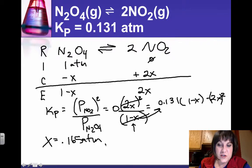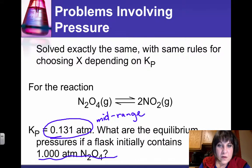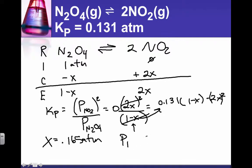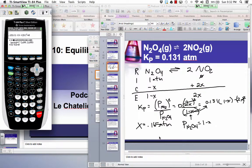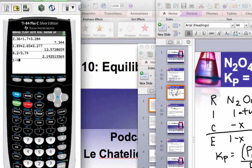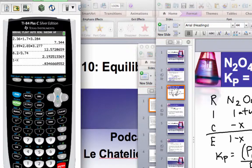Now let's answer the question, what are the equilibrium pressures in our flask? So at equilibrium, we will have, for N2O4, 1 minus x. So let's get the calculator back. And we just quit out of here, and do 1 minus x, 0.8346, so 0.835.